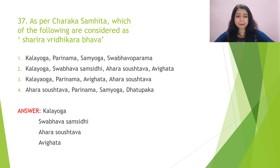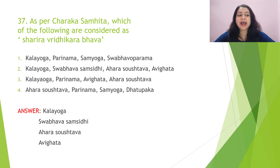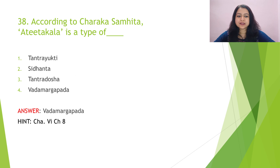Question 37: As per Charaka Samhita, which of the following are considered sharira vriddhikara bhava? The options are kala yogam, bhava samsiddhi, ahara saustavam, and avikalam — that is our answer. Question 38: According to Charaka Samhita, this question is from Charaka Vimanam chapter 8. In the context of vadhamarga, the answer is vadhamarga vada.